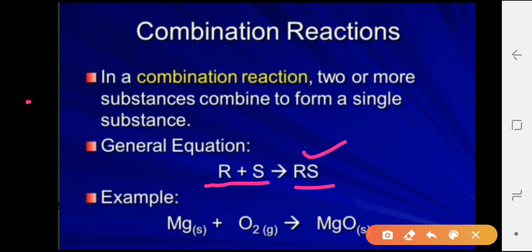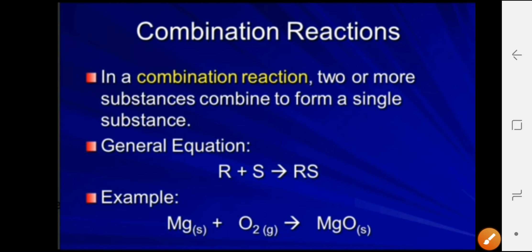Such a reaction is called a combination reaction. One example is: magnesium plus oxygen gives magnesium oxide. Magnesium is in solid format, oxygen is in gas format, and MgO — magnesium oxide — is a white-colored ash in solid format. Here, two substances, magnesium and oxygen, combine to form a new substance, MgO.